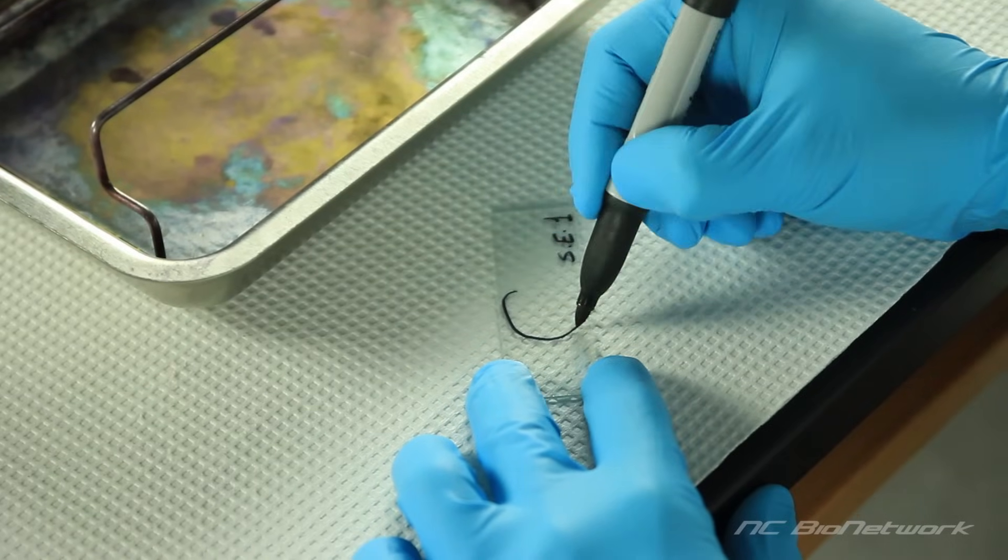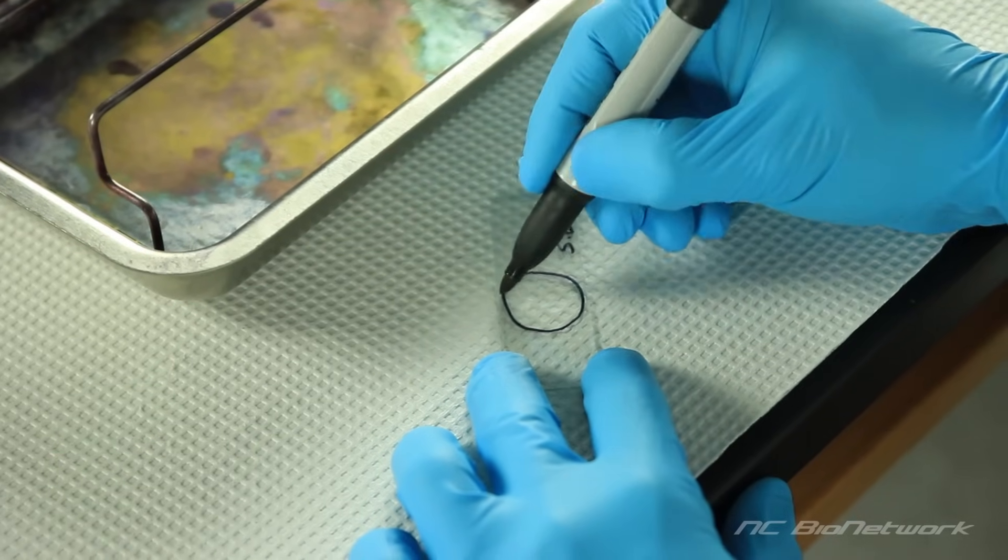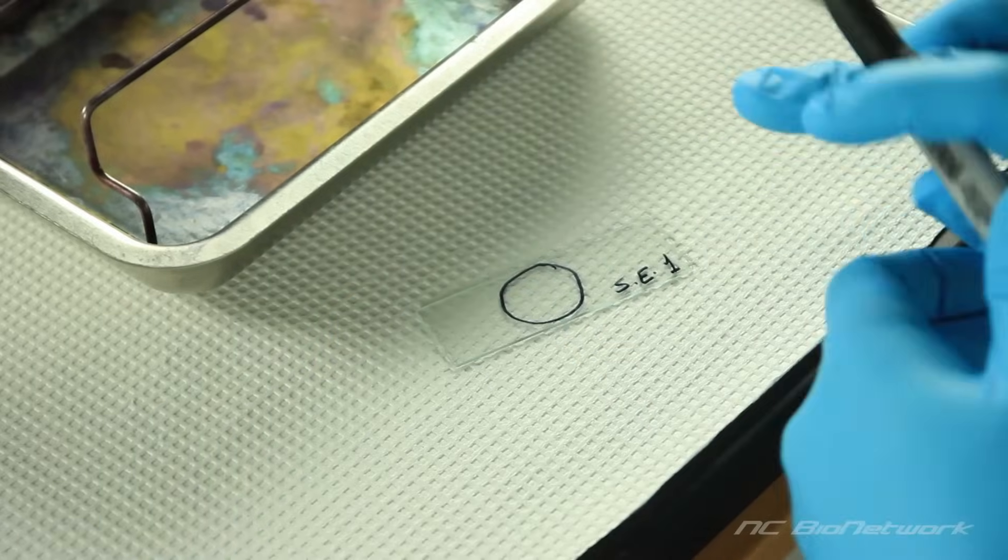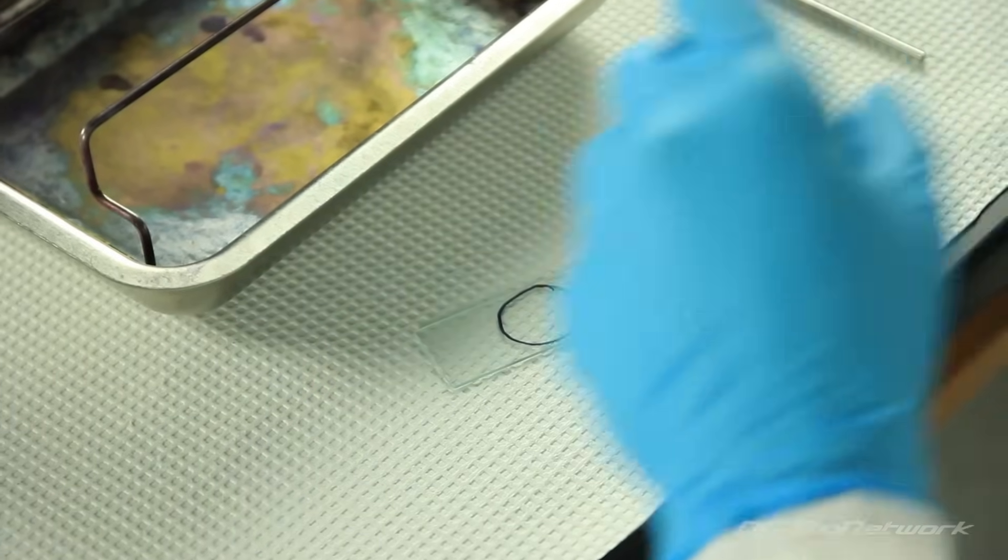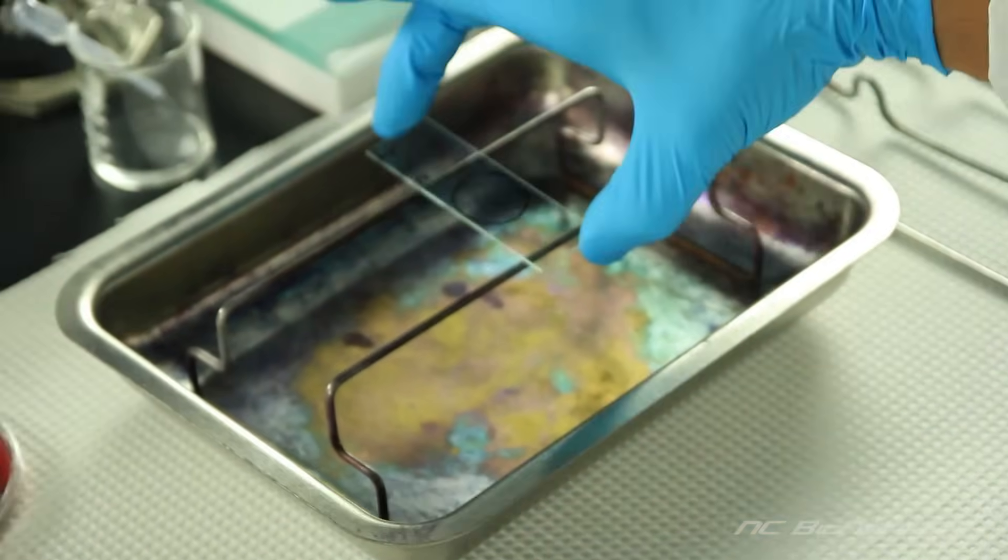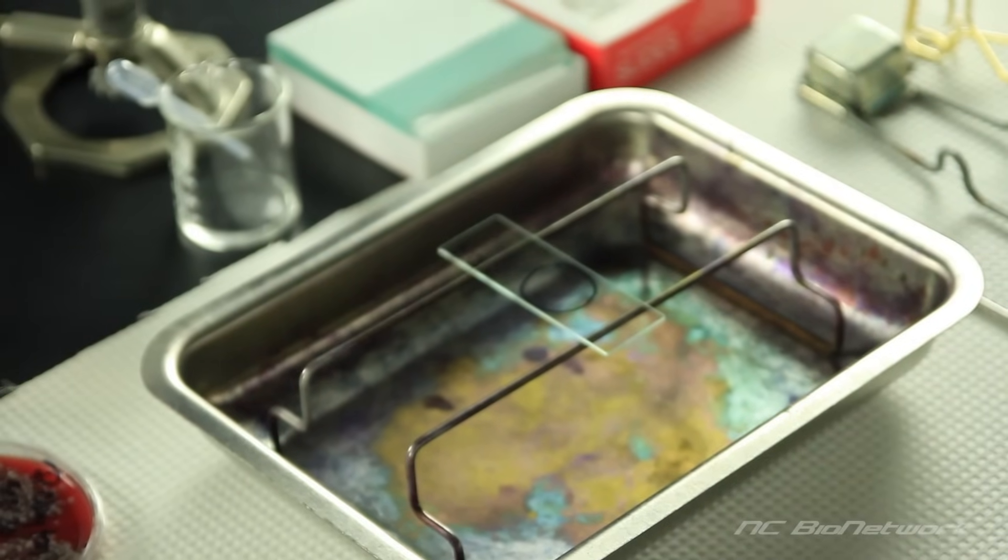Because we're using Staphylococcus from a solid source, we'll draw a circle about the size of a nickel. Turn the slide over so that the circle is on the bottom. This will prevent the marking from mixing in with the sample.